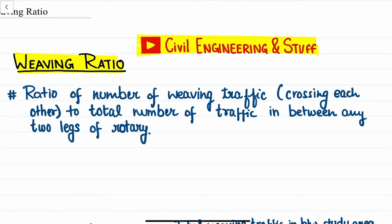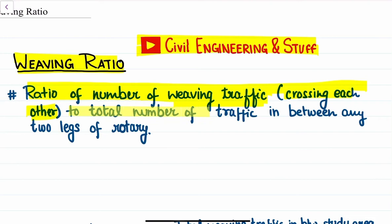Weaving ratio is a parameter that is used to find out the capacity of a rotary, and is defined as the ratio of number of weaving traffic — meaning the traffic that is crossing each other — to the total number of traffic in between any two legs of the rotary.